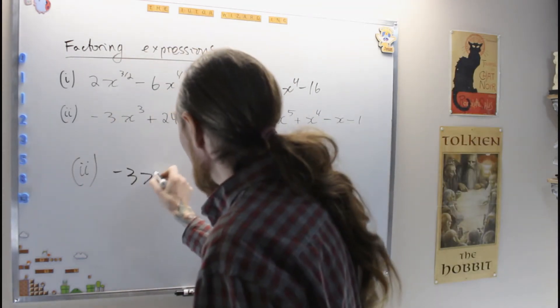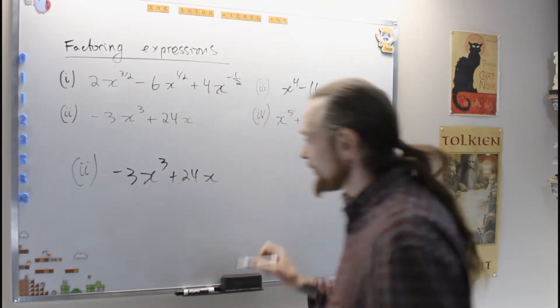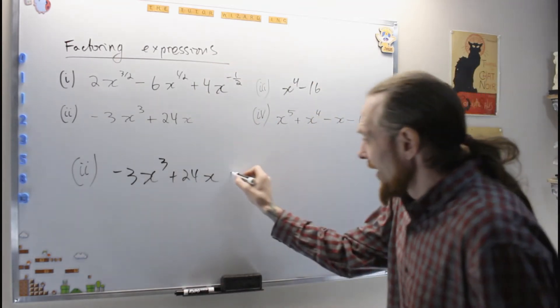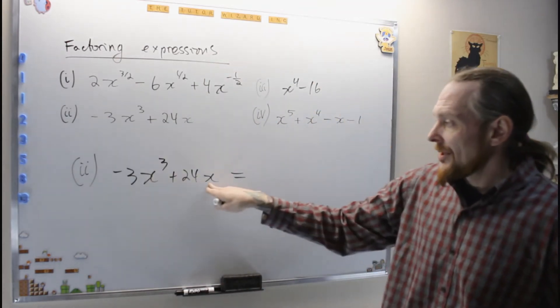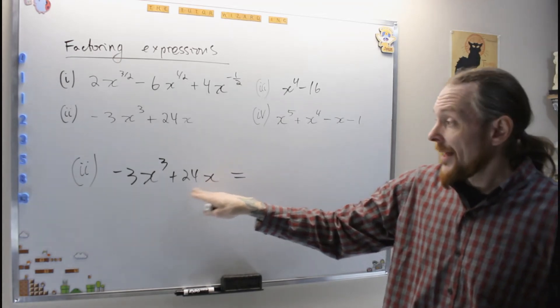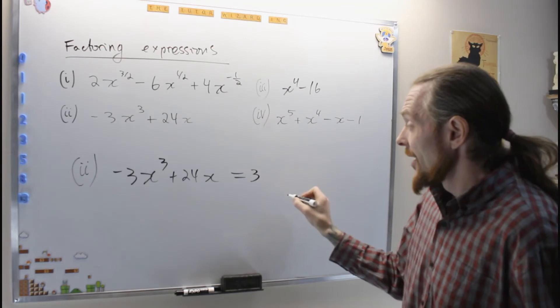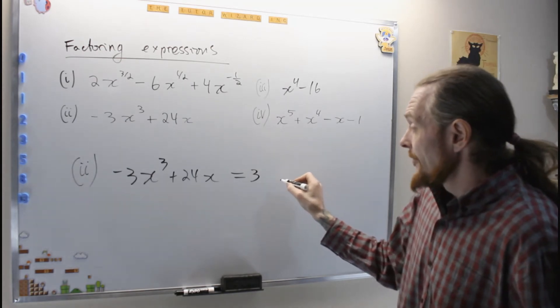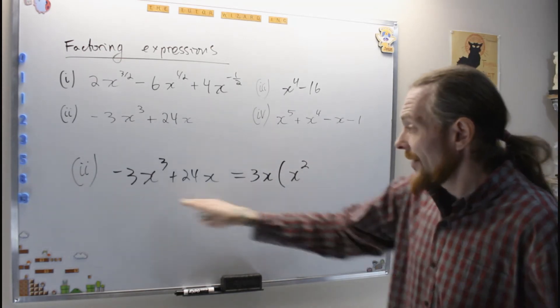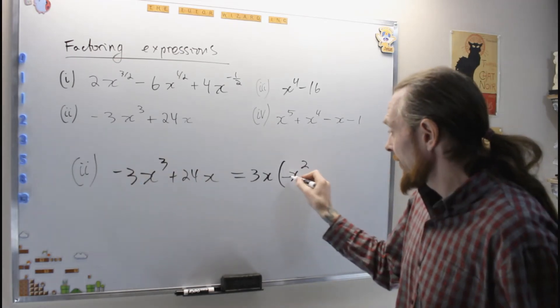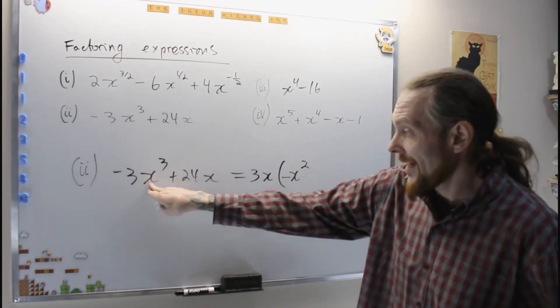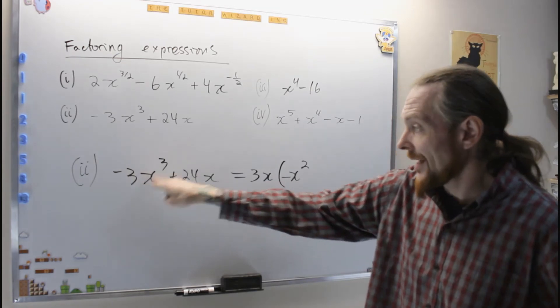So I have negative 3x cubed plus 24x. So again, I notice I have x in both terms, and I have 3 in both terms. 8 times 3 is 24, so I'm going to take that out first. Negative 3x times x squared. What do I have left? I took out the negative, I took out the 3, and I took out 1x. What do I have left? Negative and x squared.